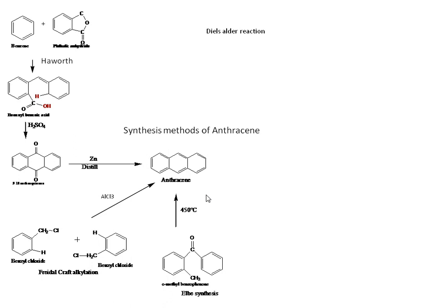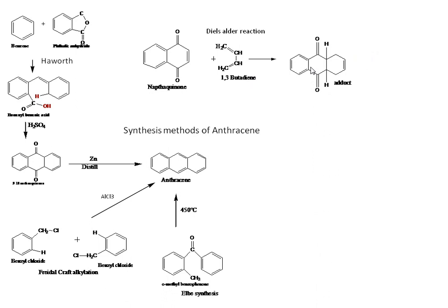The fourth method applies the Diels-Alder reaction. Naphthacenone is reacted with 1,3-butadiene to form an adduct. This adduct undergoes oxidation with chromium trioxide to form 9,10-anthraquinone, and 9,10-anthraquinone is reduced in the presence of zinc to form anthracene.